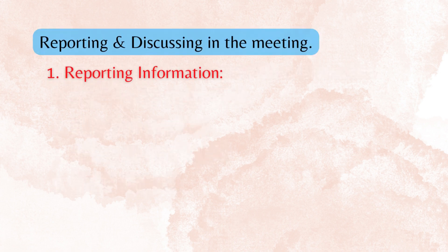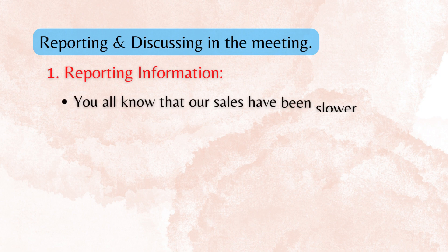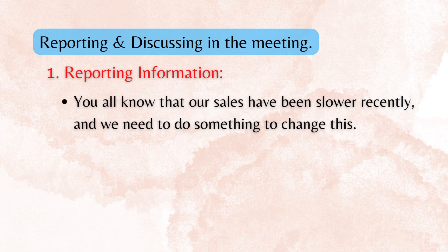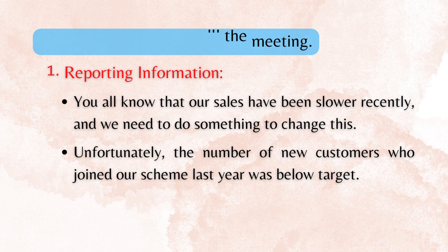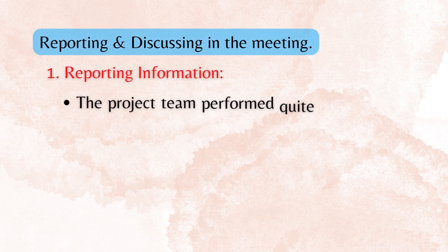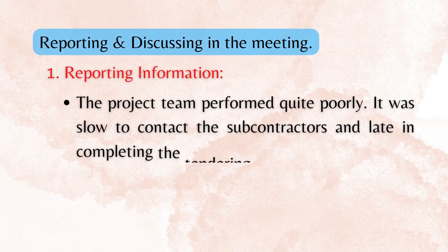1. Reporting information. You all know that our sales have been slower recently, and we need to do something to change this. Unfortunately, the number of new customers who joined our scheme last year was below target. The project team performed quite poorly — it was slow to contact the subcontractors and late in completing the tendering process.